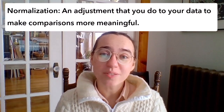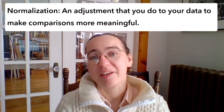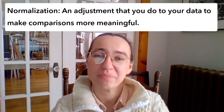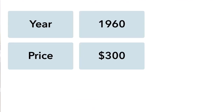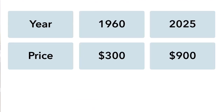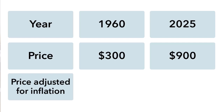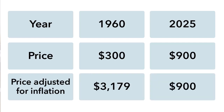Normalization is an adjustment that you do to your data to make comparisons more meaningful. Here's a non-map example. If the average cost of a TV was $300 in 1960 and is $900 now, does that mean that TVs are more or less expensive now? It's hard to say until I adjust the values for inflation. Adjusting monetary values for inflation is a kind of normalization — it allows for more meaningful comparisons.